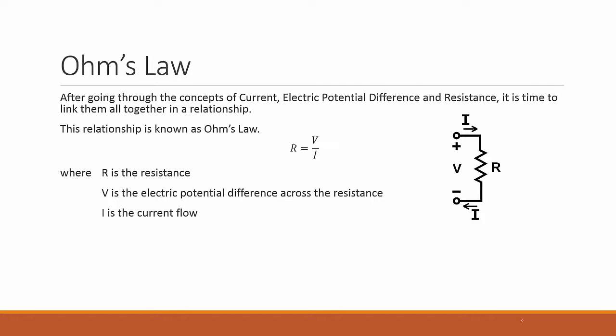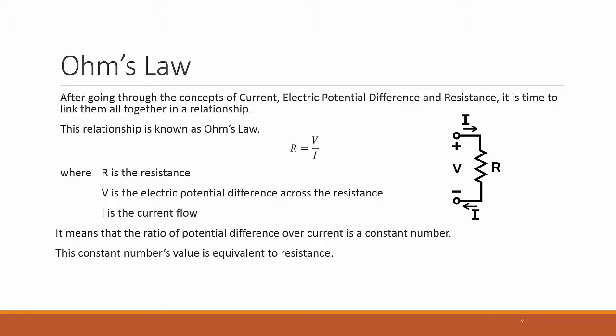You can be summarized into this picture over here. This means that the ratio of the potential difference over the current is a constant number, and this constant number's value is equivalent to the resistance R.